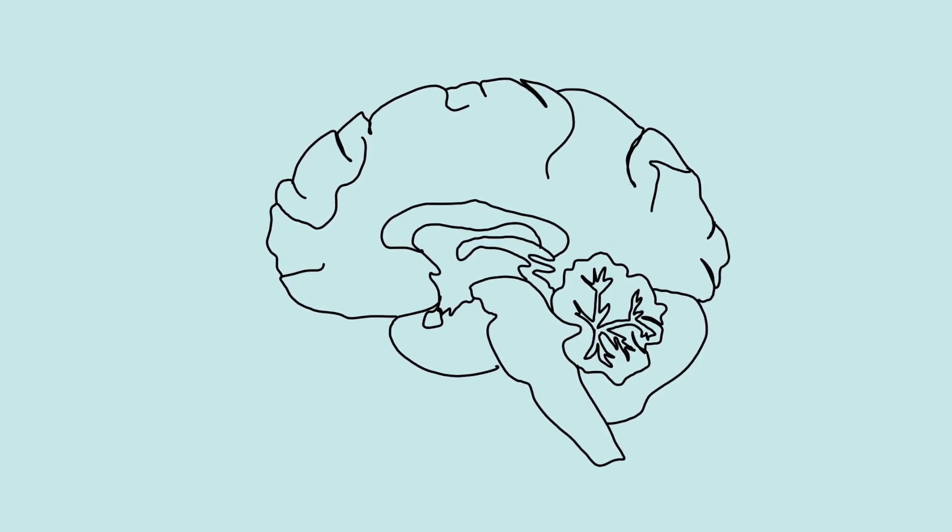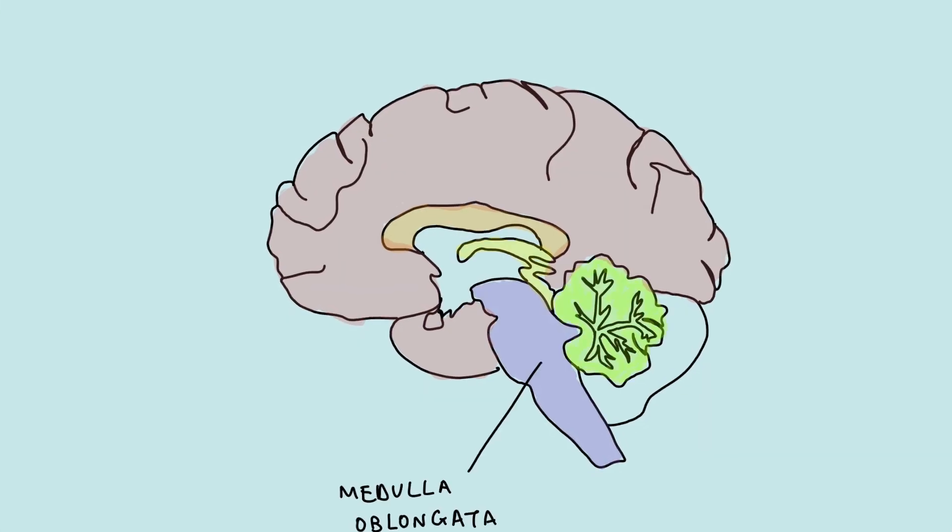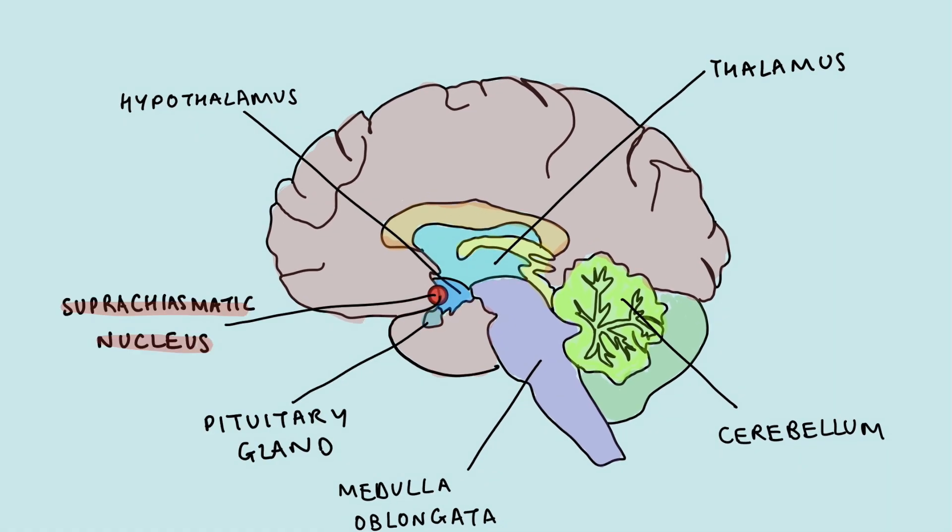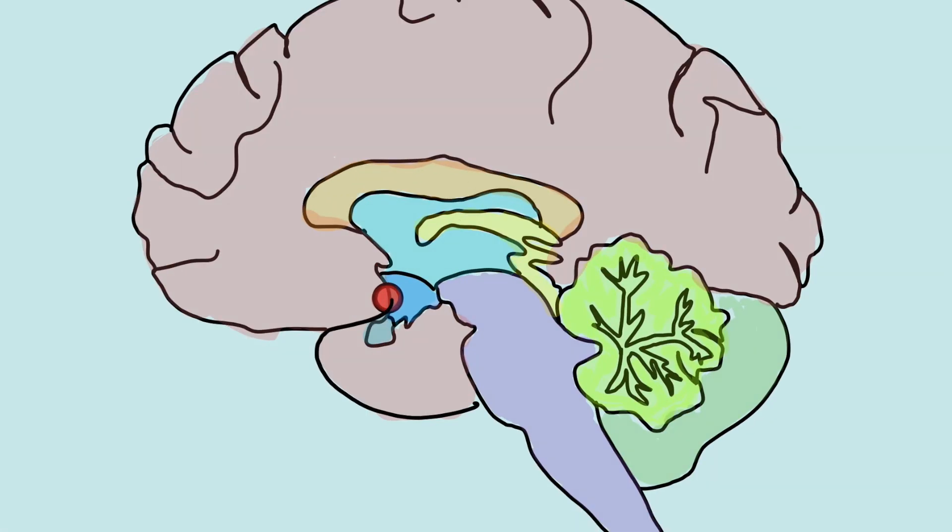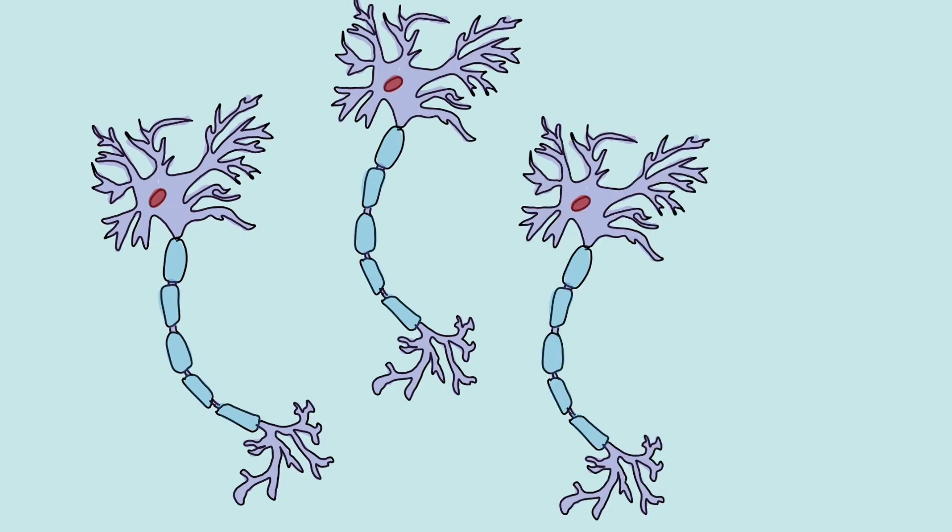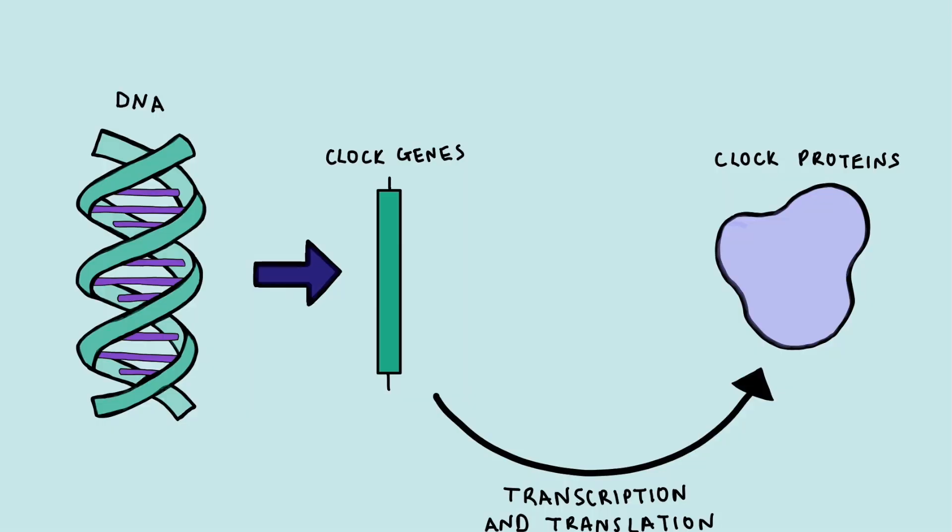To understand how your body tells the time, we need to look at the brain. The circadian rhythm is controlled by a cluster of neurons called the suprachiasmatic nucleus, here. Within the suprachiasmatic nucleus, each individual cell is controlled by a kind of molecular clock.